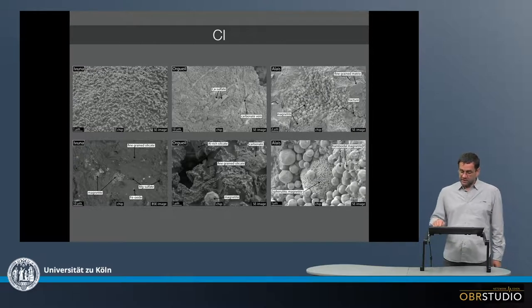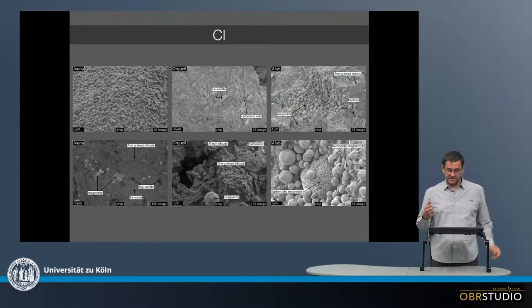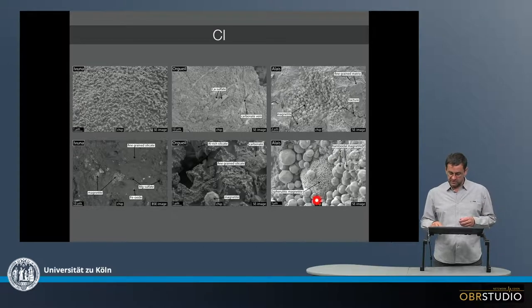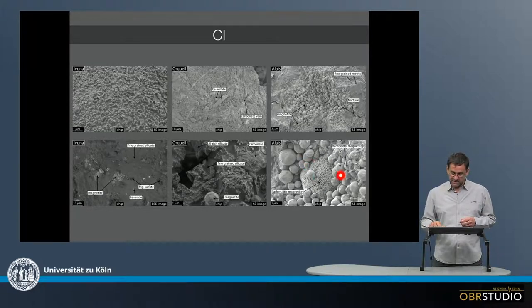And finally there's Alais, and some larger nests of these magnetites, which are quite often found, or this spherulitic magnetite, larger one inside the smaller grains around here.